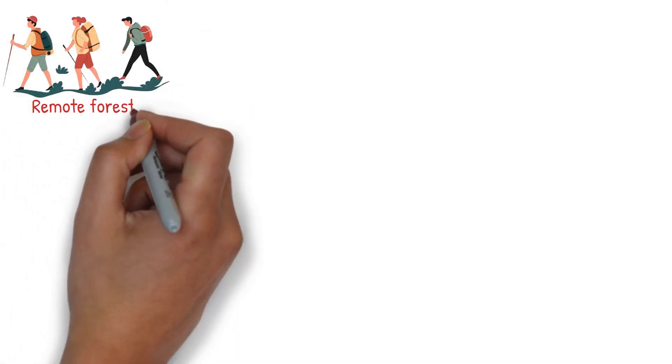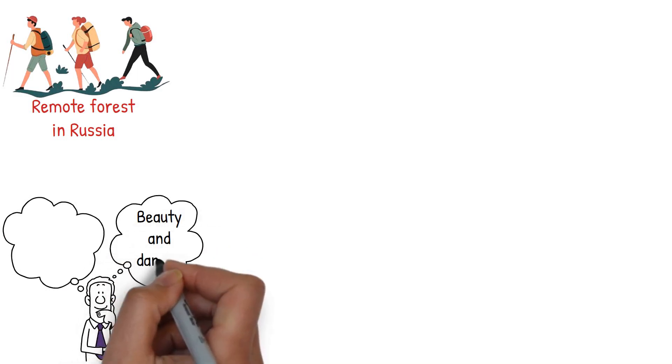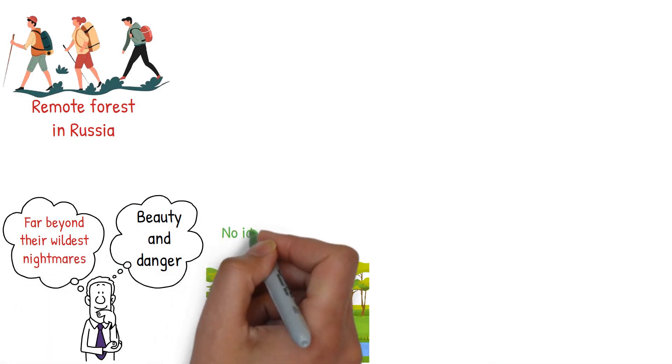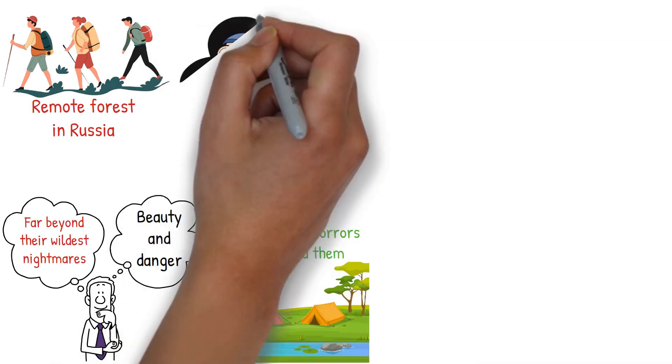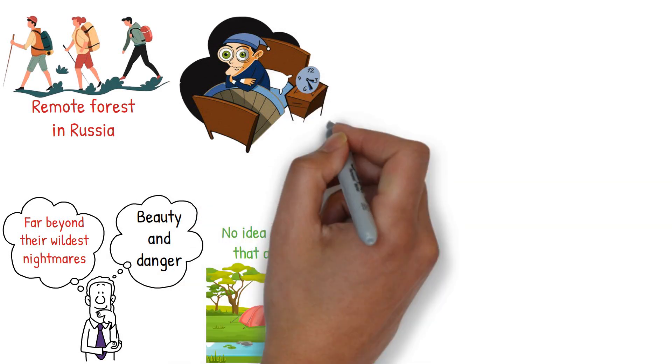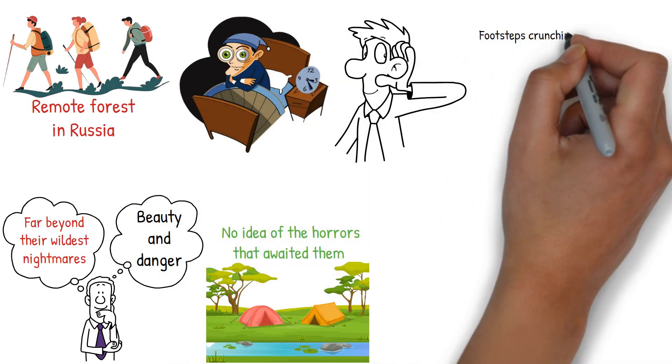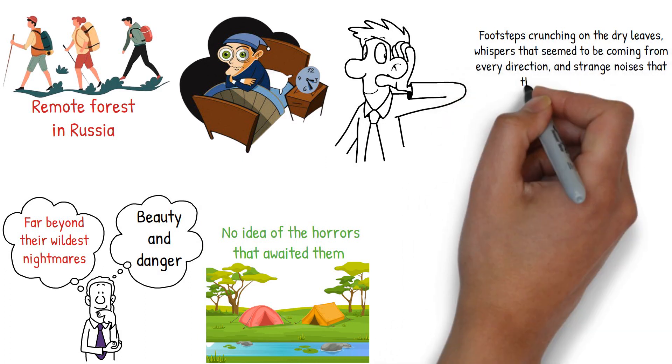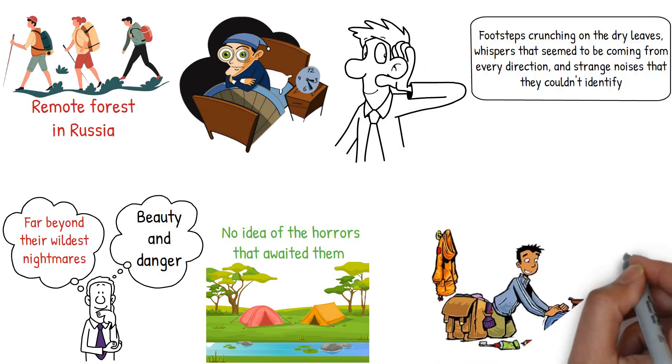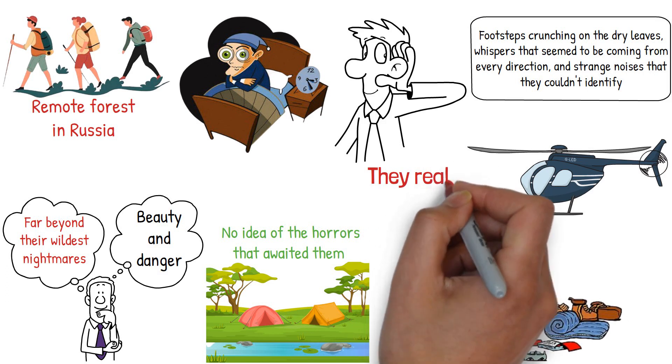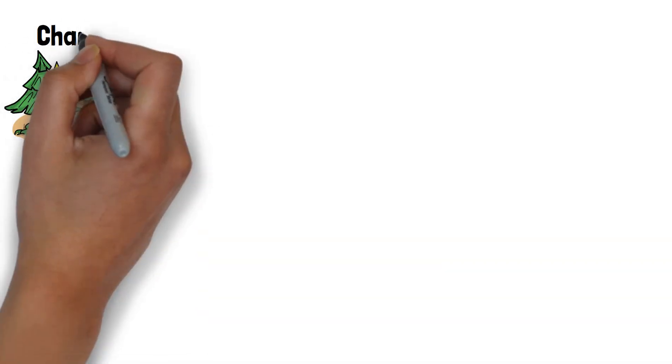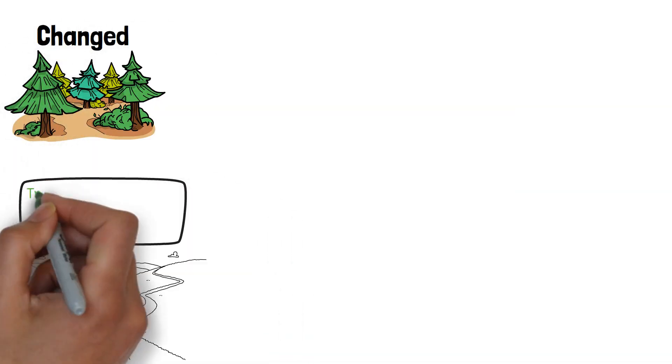The hikers had come to the remote forest in Russia to experience its beauty and danger, but what they experienced was something far beyond their wildest nightmares. As they set up their tents near the small lake and began their exploration, they had no idea of the horrors that awaited them. It was the middle of the night when the hikers were awoken by sounds that chilled them to the bone. They could hear footsteps crunching on the dry leaves, whispers that seemed to be coming from every direction, and strange noises that they couldn't identify. They were terrified and decided to pack up and leave, but as they tried to find their way back to the helicopter, they realized they were lost. The forest seemed to have changed, the familiar landmarks were gone, and the trails were all leading them in circles.